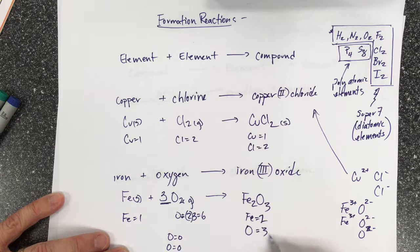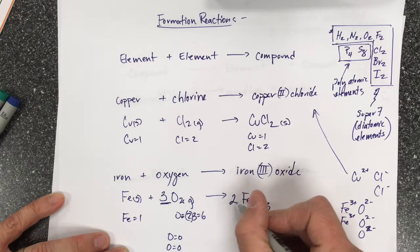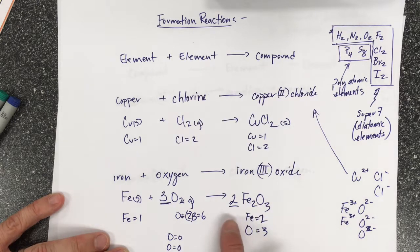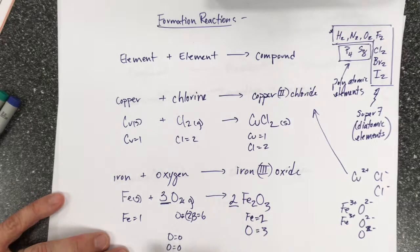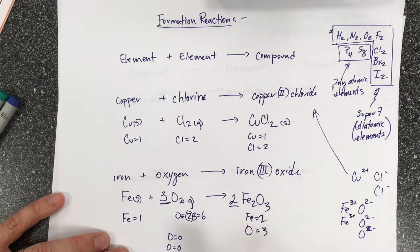Here, I want to make 6 oxygens. And the only thing I can do is change the coefficient. The coefficient is the number that's in front of it. And this is like the molar amount. So one mole of iron reacts with three moles of oxygen molecules to produce two moles of iron 3 oxide.